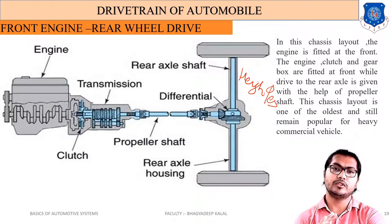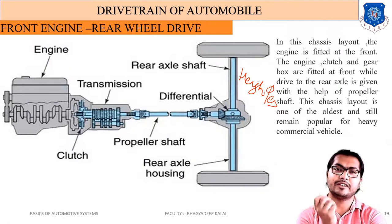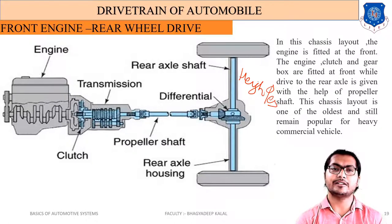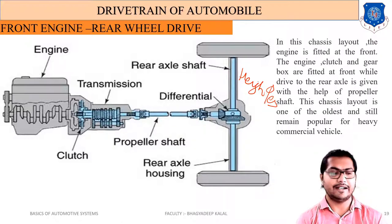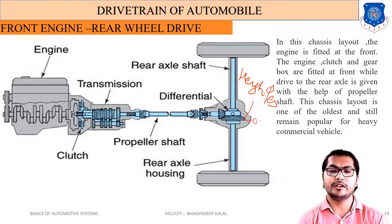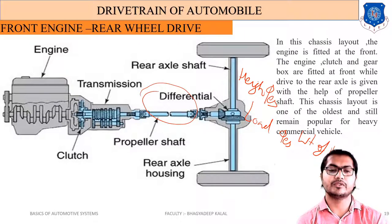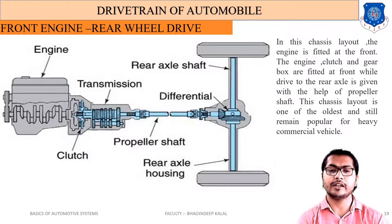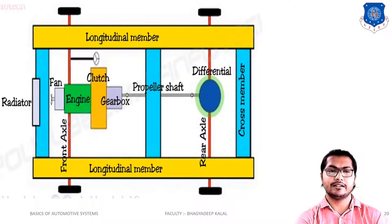When moving over a speed breaker, the propeller shaft can hit it, so ground clearance must be increased in front engine rear wheel drive. Additionally, the weight of the vehicle increases because extra components like the Hooke's joint, propeller shaft, and differential are used. Compared to front engine front wheel drive, this results in reduced mileage.